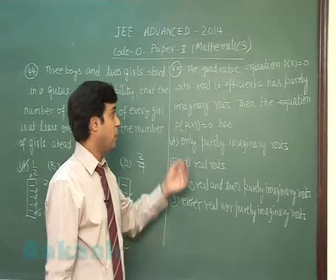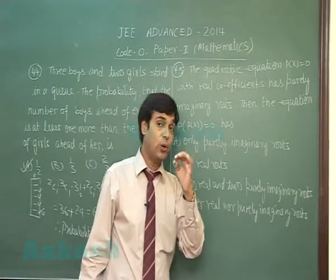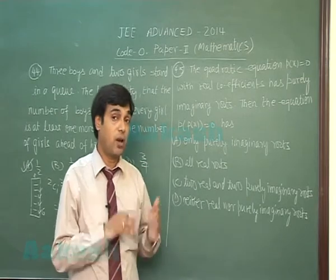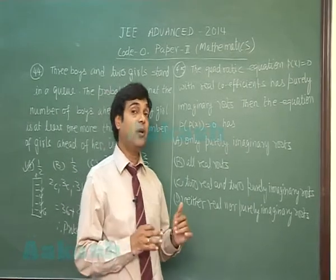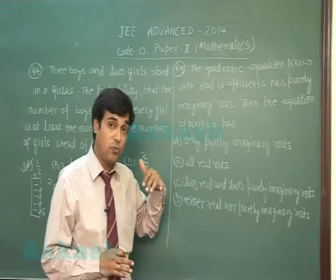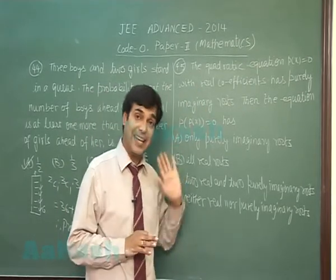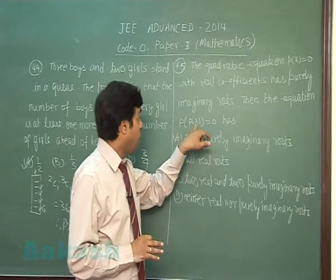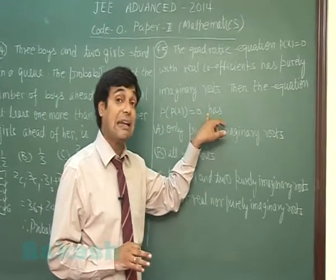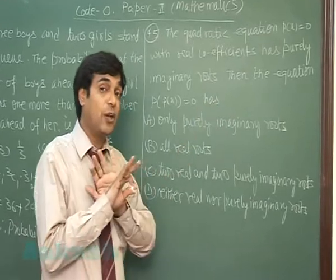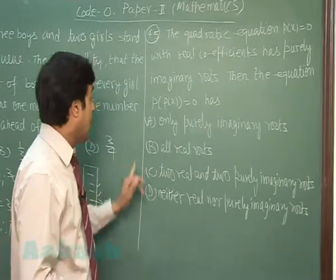Now equation p(x) = 0 has purely imaginary roots, means if we look at the parabola y = p(x), it will be opening either upwards or downwards. Means p(x) will be either positive or negative for any x. P of some positive number or p of some negative number cannot be 0, means it cannot have real roots.